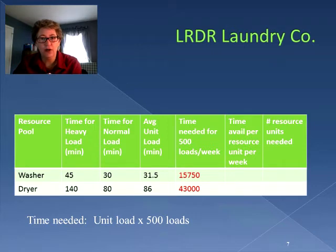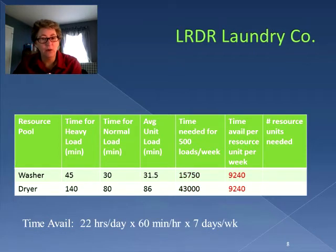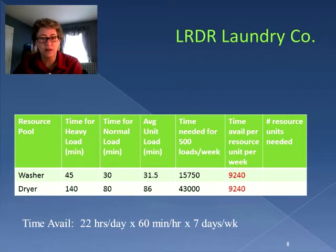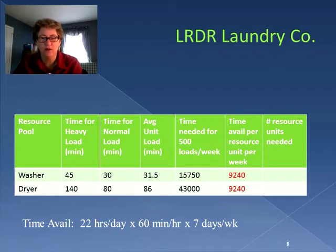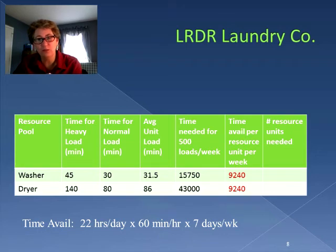We also know how much time is available per resource unit per week. With 22 hours a day, 60 minutes per hour, and seven days per week — 22 times 60 times 7 — a single washer or a single dryer can each run for 9,240 minutes per week. To determine the number of resource units needed, we take the total time needed for 500 loads divided by the time available per resource unit.